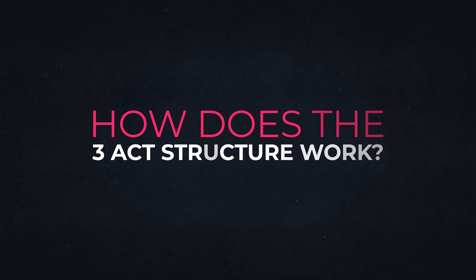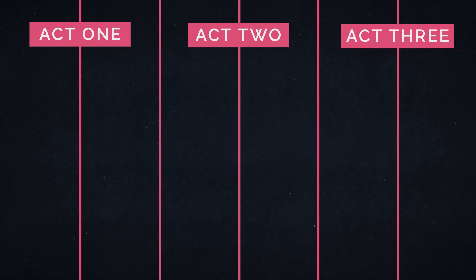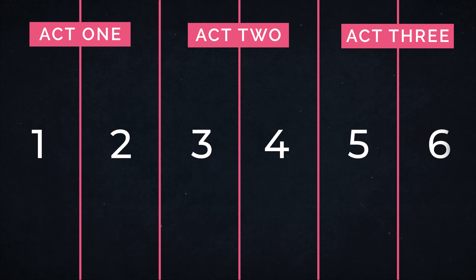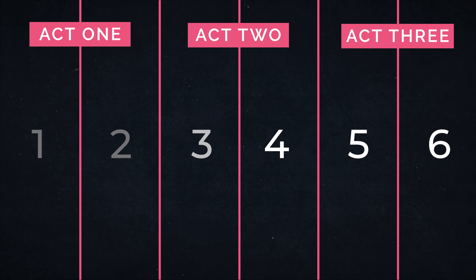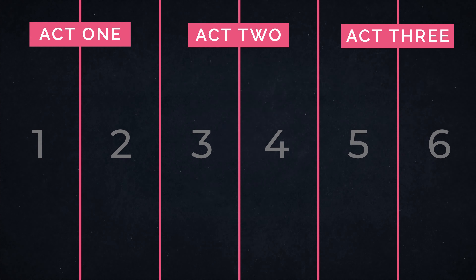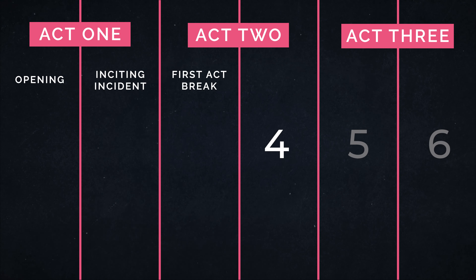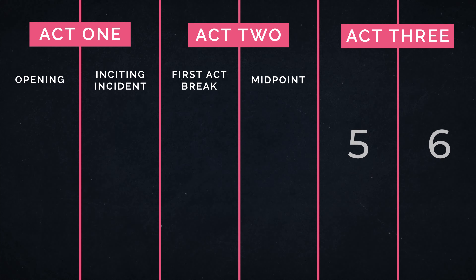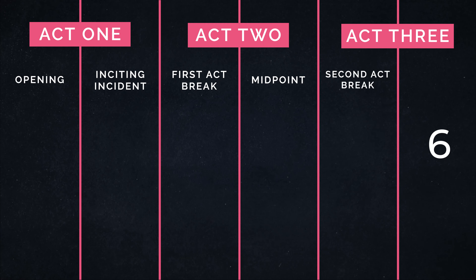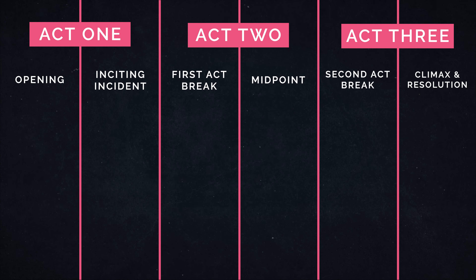Use this as a starting point to help you work out the basic story structure of your documentary and feel free to adjust and adapt when needed. So how does the three-act structure work? As you can see in this diagram, there are six key plot points in the story that sit within the three-act structure and help to give it shape. Each act has two key plot points: within act one, the opening and inciting incident; within act two, the first act break and the midpoint; and within act three, the second act break and the resolution climax.